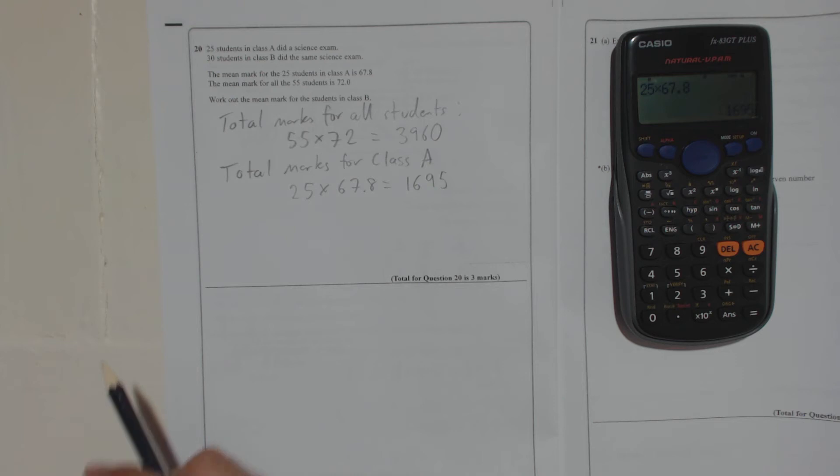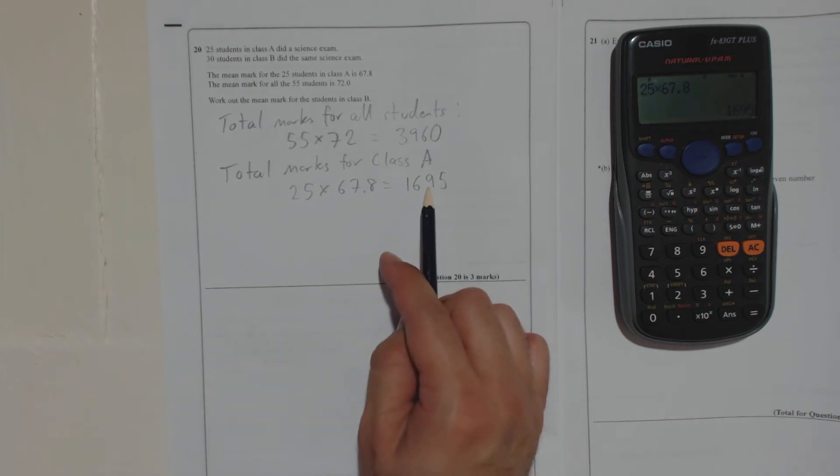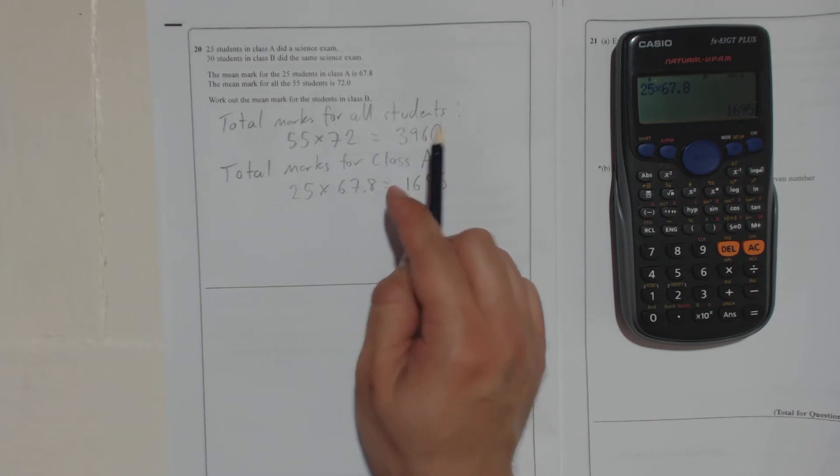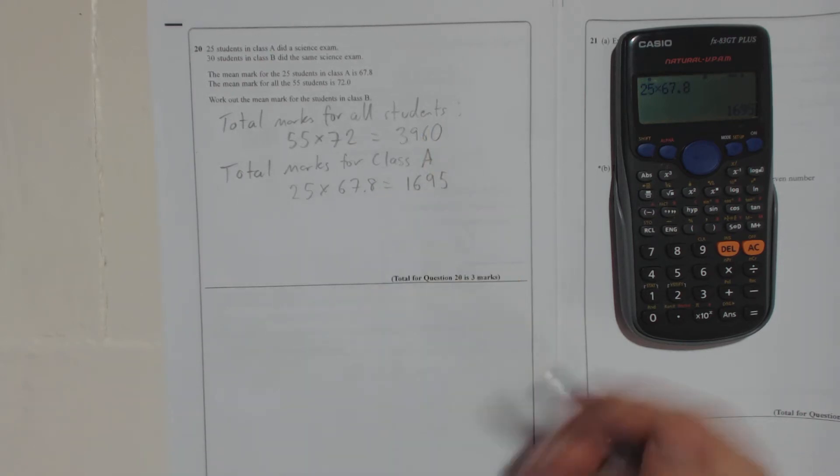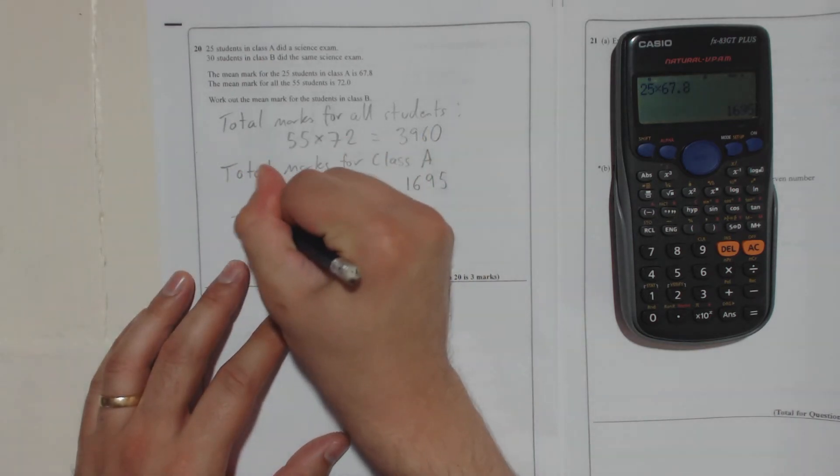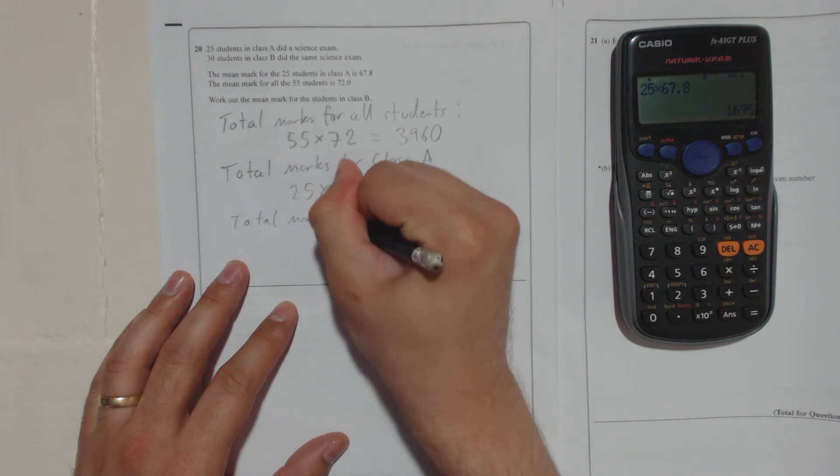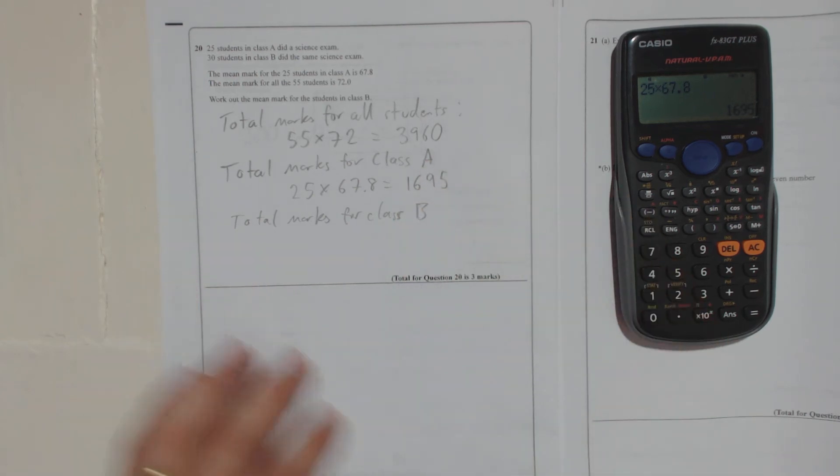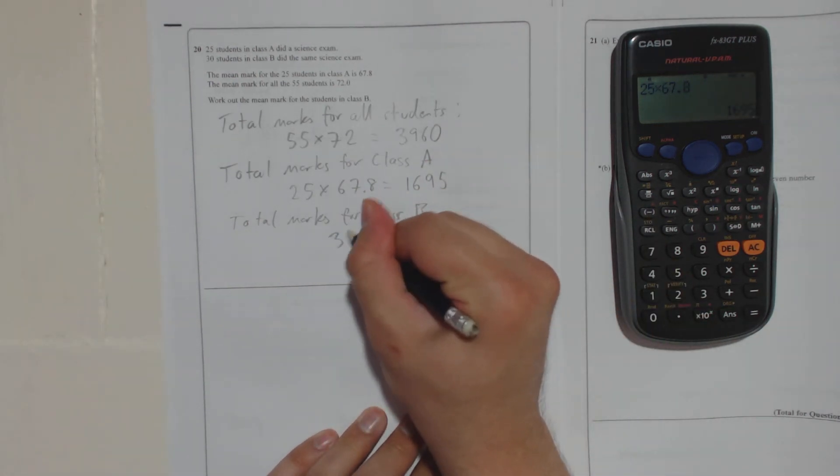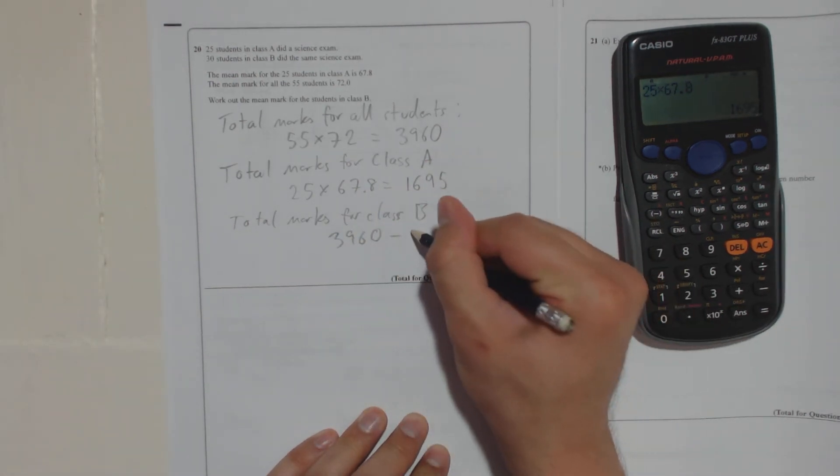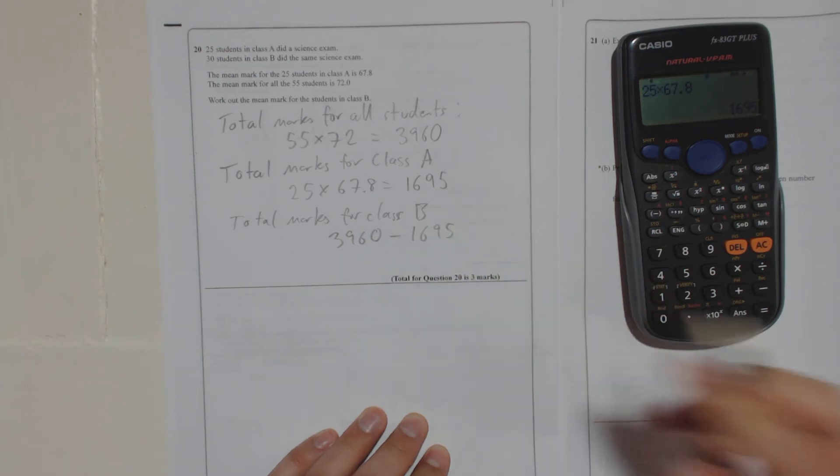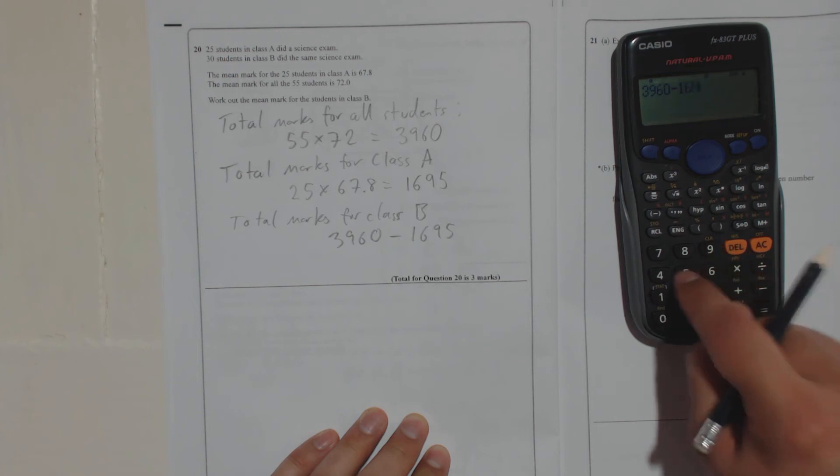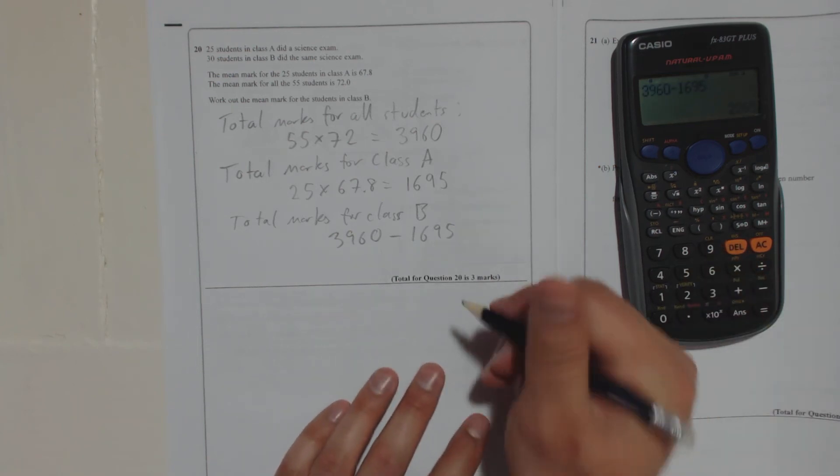So now, because you know the marks for class A and you know the marks for all of them added up, all you've got to do is find the difference and that will give you total marks for class B. So it's 3960 subtract 1695, which is 2265.